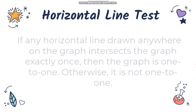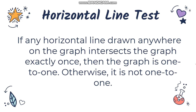We also have what we call the horizontal line test. If any horizontal line drawn anywhere on the graph intersects the graph exactly once, then the graph is one-to-one; otherwise it is not one-to-one. If a function is one-to-one then it has an inverse function. If the horizontal line touches the graph more than once, then it's not one-to-one and therefore it doesn't have an inverse function.